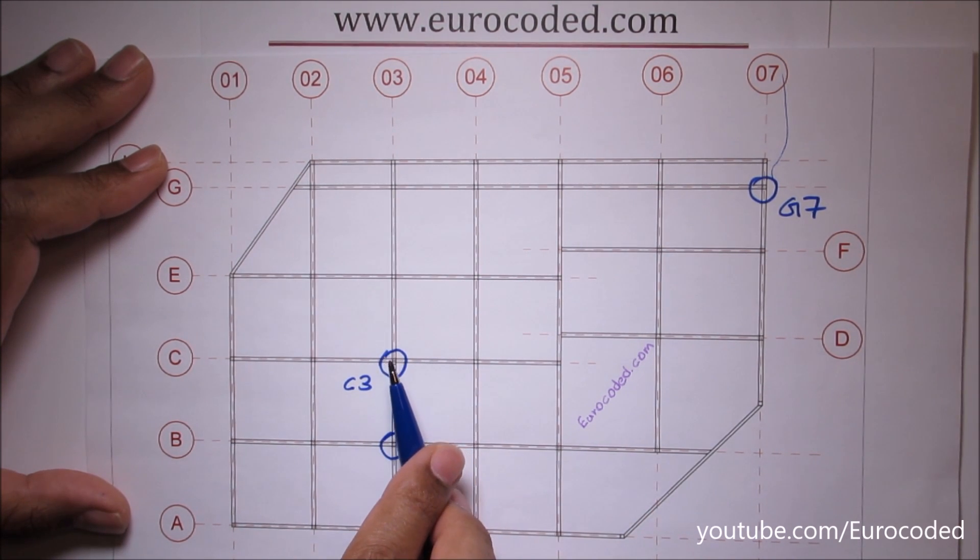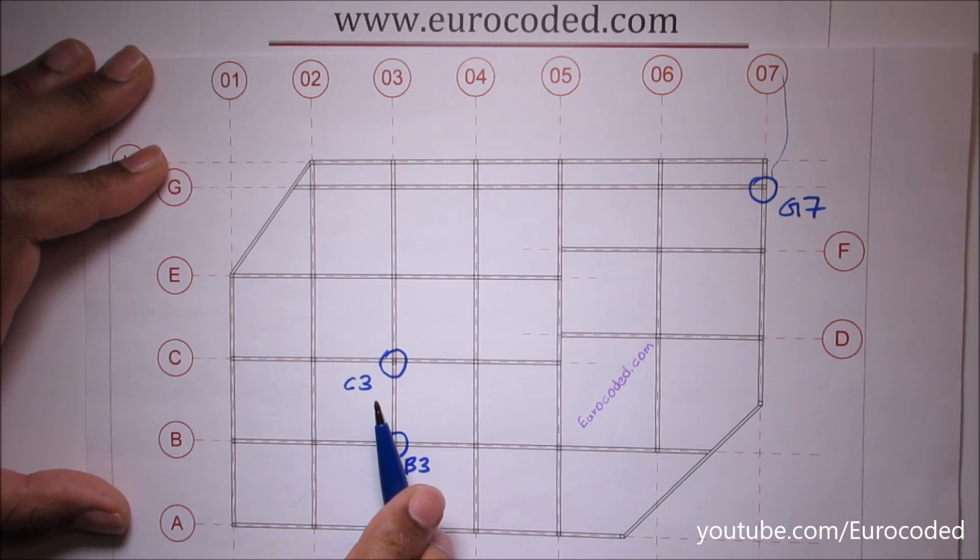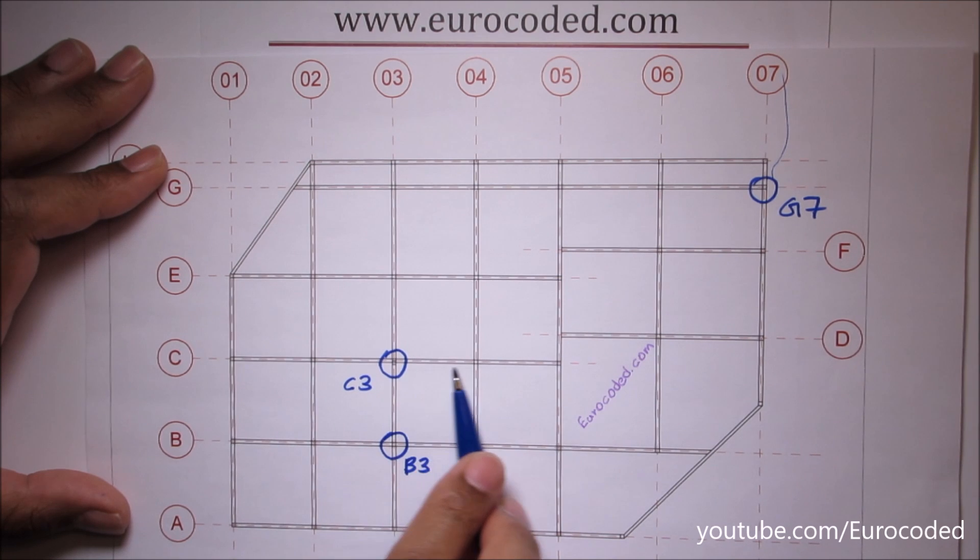Then we need to add a suffix number to that C3 to number our beams in that particular panel. We use 1, 3, 5, so on for beams spanning up the panel and then we use 2, 4, 6 for beams across the panel.